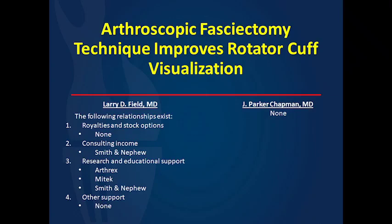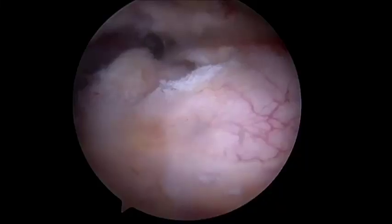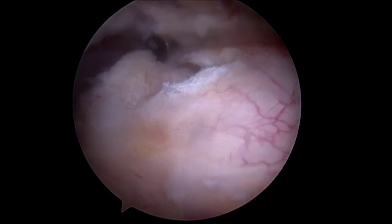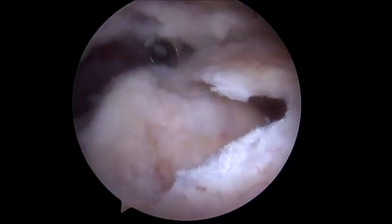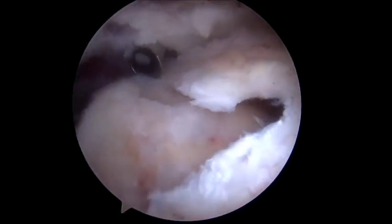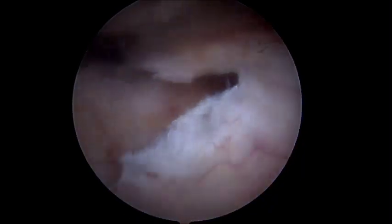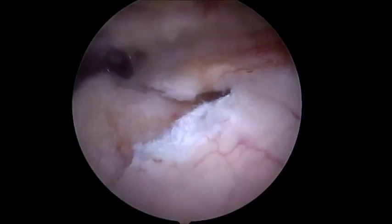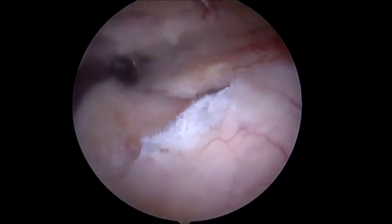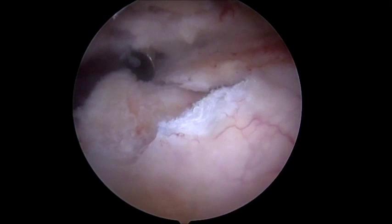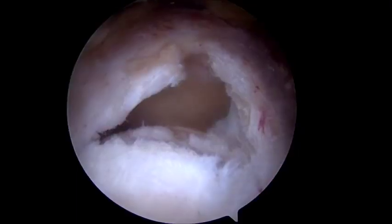This video demonstrates a technique to improve visualization of rotator cuff tears from a lateral viewing perspective. This left shoulder in the beach chair position, viewed from a posterior portal, shows a rotator cuff tear of the supraspinatus. However, there are significant limitations in how much we can appreciate from the posterior portal.